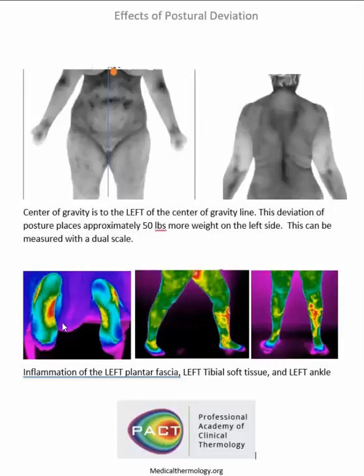As you can see here, the plantar fascia on the left leg is more hyperthermic than the opposite, indicating that there's more inflammation due to pressure on that side. This is something we see consistently time after time. This is only a single case study, so obviously more of these need to be correlated, but in our clinical practice we see this all the time, and in our patients as well that we read for other doctors around the world.